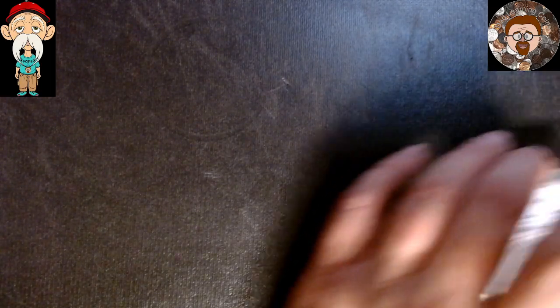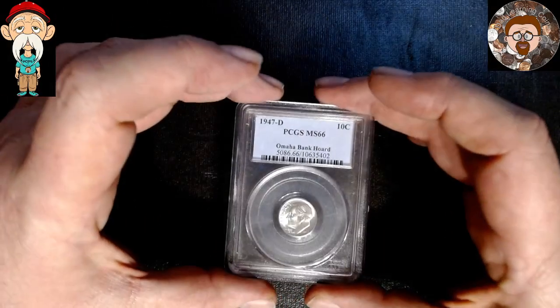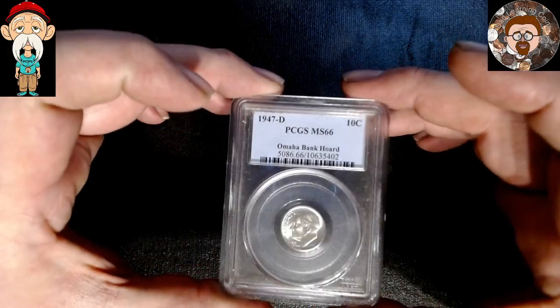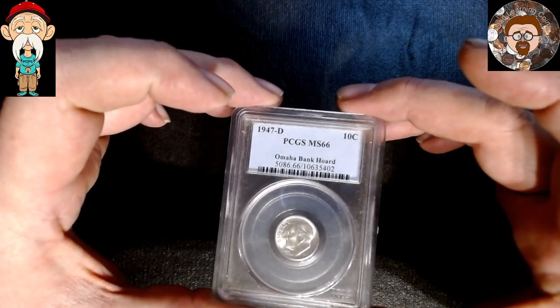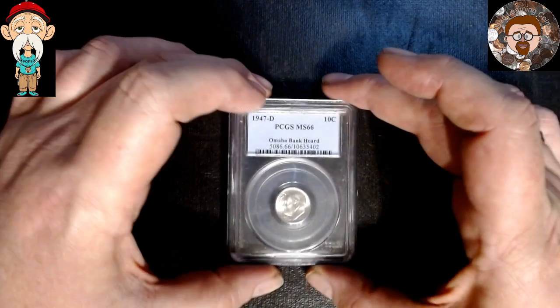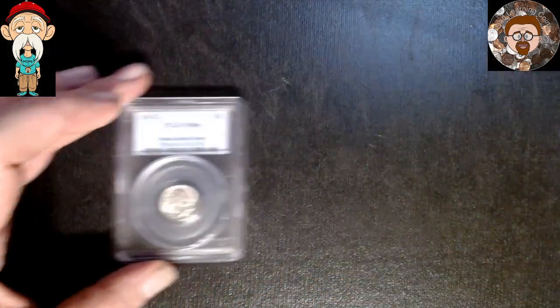So let's get into what we're going to pick from. We're going to have this one, 1947 D PCGS graded MS-66 Dime Rosie.